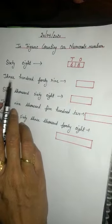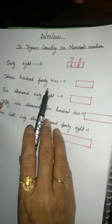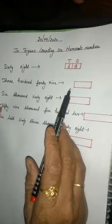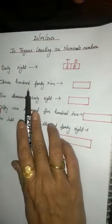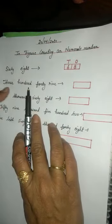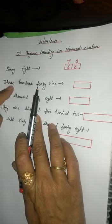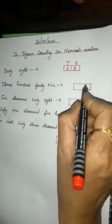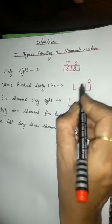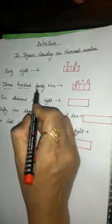Next example: 349. First of all we will write the place value and draw a box. Where do we write the place value? We know by looking at the first digit. What is the first digit? 300. So we will write place value up to 100. We write 100, 10's, and 1's. Then we fill in 300 and 49.